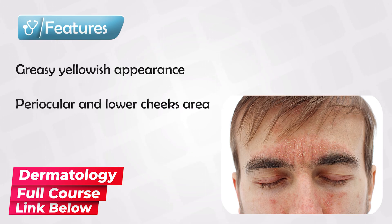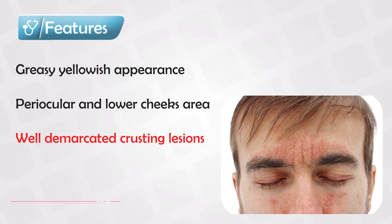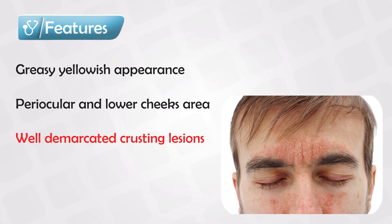Look for a well-demarcated red area with yellow crusts. It is common in both infants and adults, but as people age, their sebaceous glands tend to work less and less and produce less and less sebum, so we don't see it as often in elderly patients.